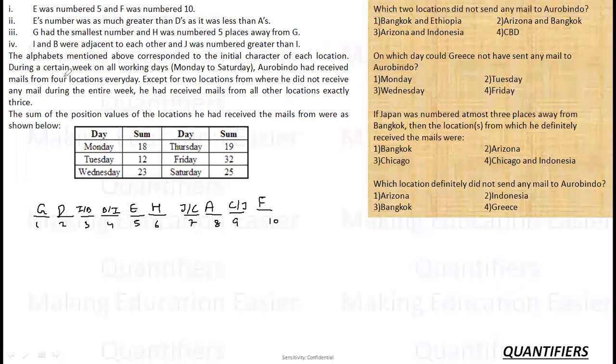Now, what is further given to me? The alphabets mentioned above correspond to the initial character of each location. During a certain week on all the working days, Monday to Saturday, Aurobindo had received mails from four locations every day. There were two locations from where he did not receive any mail during the entire week. So there were two locations out of these 10 that did not send mail.